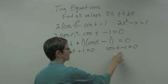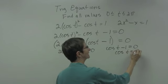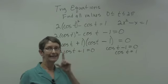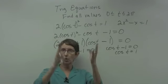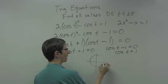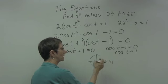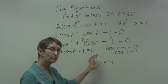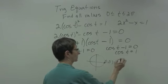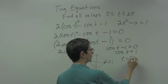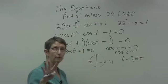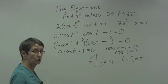Setting each factor equal to zero: cosine t minus 1 equals 0 gives cosine t equals 1. The cosine equals 1 at the angle on the positive x-axis, where the point is (1, 0) on the unit circle, so that's at t = 0. But we include 0 and 2 pi, so both are possibilities: t = 0 and t = 2 pi.